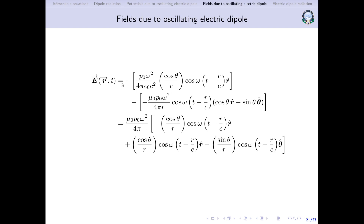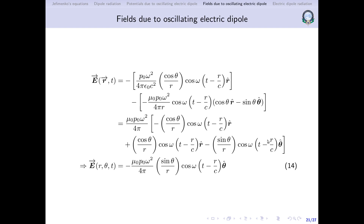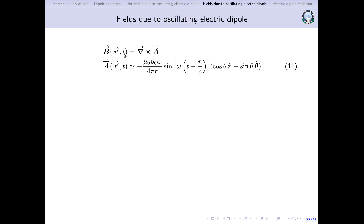The two cos θ / r · r-cap terms have opposite signs and cancel out, leaving only the sin θ / r · θ-cap term. Therefore the electric field is: E = −μ₀p₀ω² / (4π) · (sin θ / r) · cos(ωt − r/c) · θ-cap. It varies as 1/r. This completes the electric field calculation.